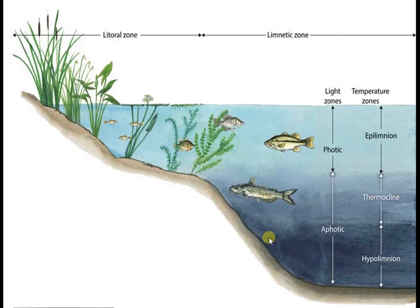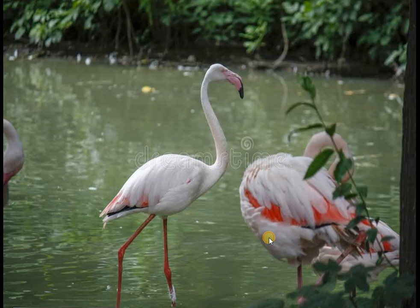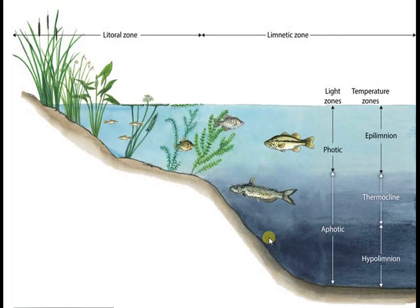Try to answer the following questions on the basis of what you have learned so far. Name some organisms in the pond that can stay in different regions in the same pond. What are the organisms? For example, fish — they can stay in different regions in the same pond.